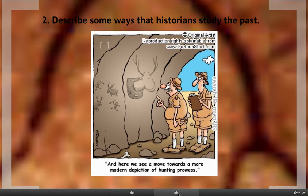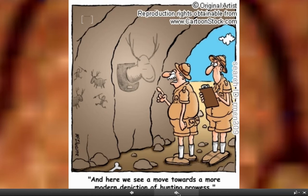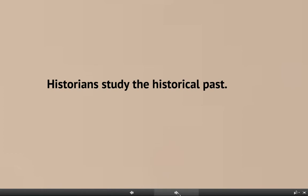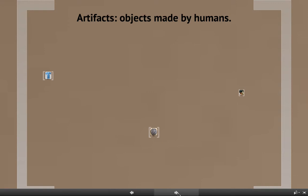Now moving to our second lesson objective, which is to describe some ways that historians study the past. How do we figure out about things that happened so long ago? When you read textbooks or watch videos about history, how do the people that created those things know about what happened? Historians study the historical past — they look at what happened previously and try to figure out exactly how it worked, or as best they can how it worked.